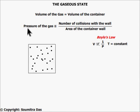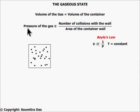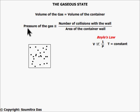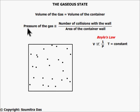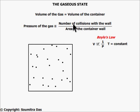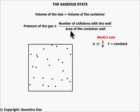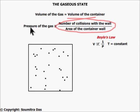Now let us see what happens when we increase temperature at constant pressure. The gas molecules' random motion velocity will increase, so the number of collisions against the wall will increase. The area also increases because the volume of the container has increased. So this ratio — in other words the pressure — remains the same.